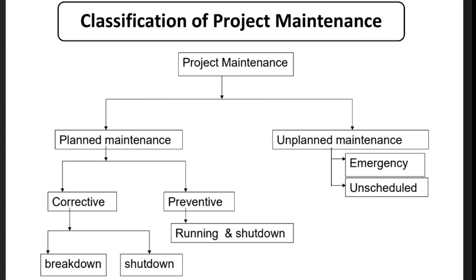Plan maintenance is carried out according to a planned schedule. If something goes wrong unexpectedly — for example, a machine fails — that falls under unplanned maintenance, such as emergency maintenance. Planned and unplanned maintenance are essentially opposite approaches to maintenance management.